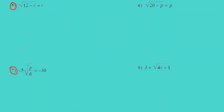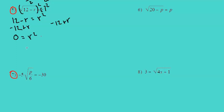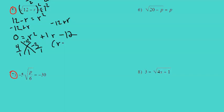Let's move on to number 5. The square root of 12 minus r equals r. Exponentiate each side by 2, and we get 12 minus r equals r squared. Move everything to one side of the equation, so we have 0 equals r squared plus r minus 12. We want to factor this: a times c is negative 12 and b is 1. Looks like 4 and negative 3 would work. Divide by a, and you have r plus 4 times r minus 3 equals 0.